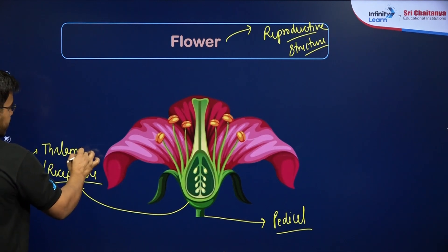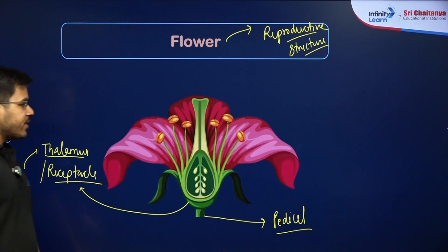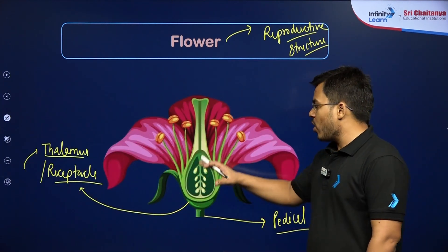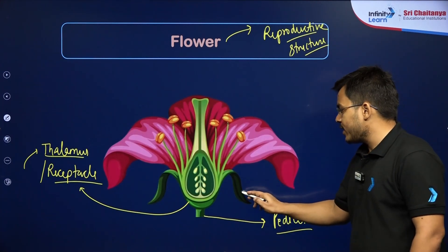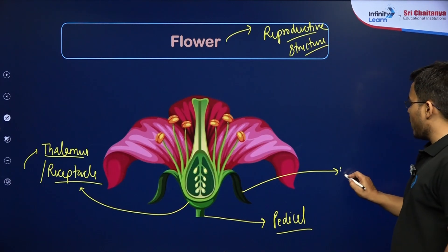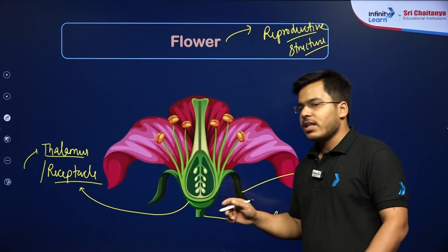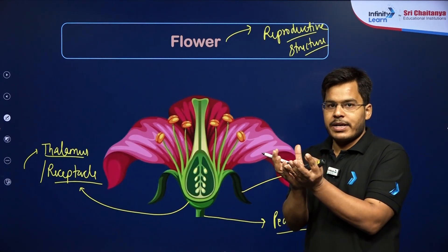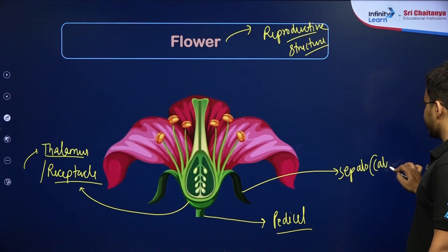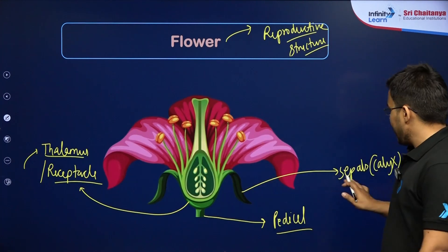The receptacle is also called the thalamus — both names refer to the same part. This thalamus or receptacle holds all the other parts of the flower. The next part is this leafy structure present at the base of the flower; we call it the sepal. A bunch of sepals together is known as the calyx.